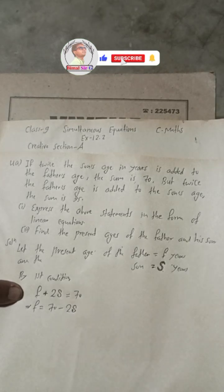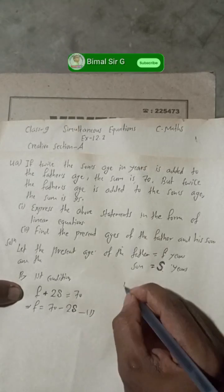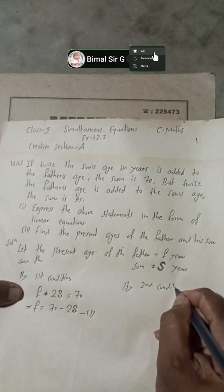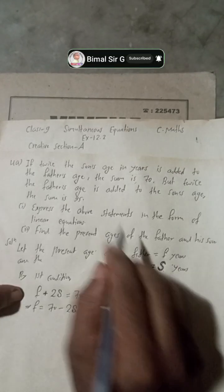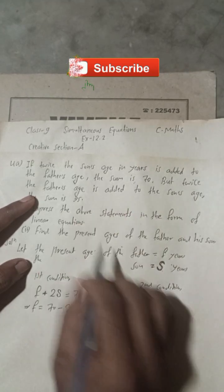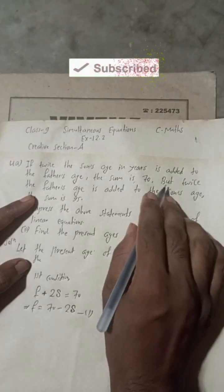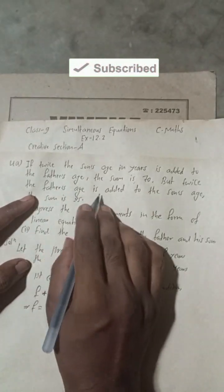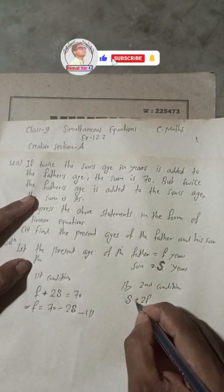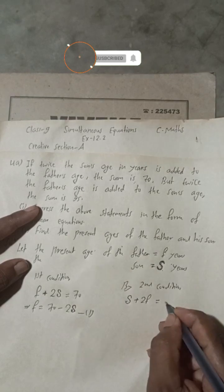By the second condition: twice the father's age is added to the son's age. So son's age S plus twice the father's age 2F equals 95. This gives us our second equation: S + 2F = 95.